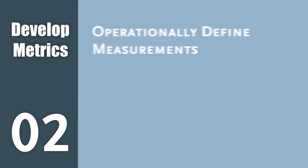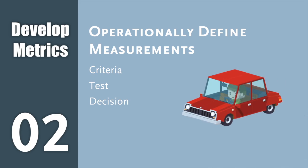We should operationally define our measurements. This will include a criteria, a test, and a decision. An example of a non-operationally defined measurement would be: go out and count the number of red cars you see in the next hour.